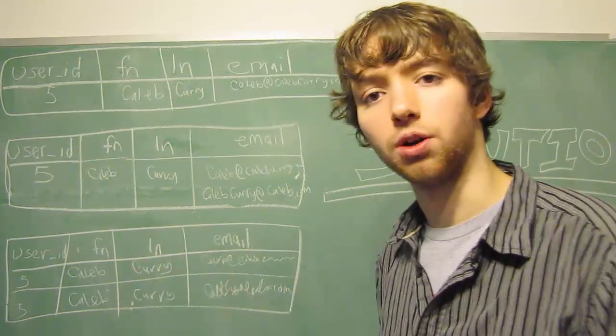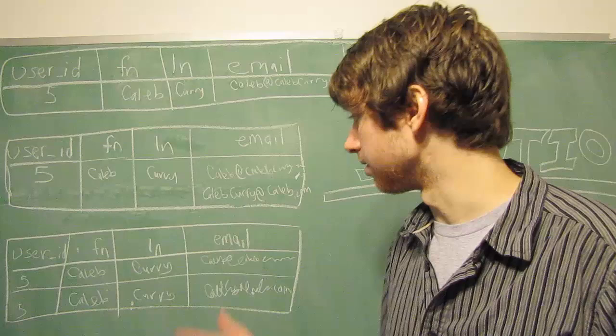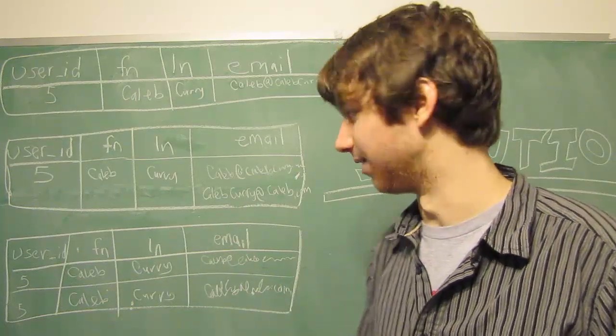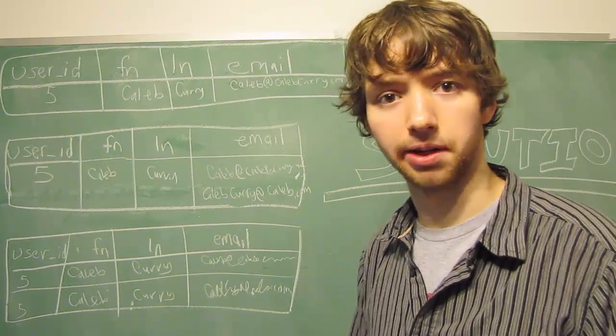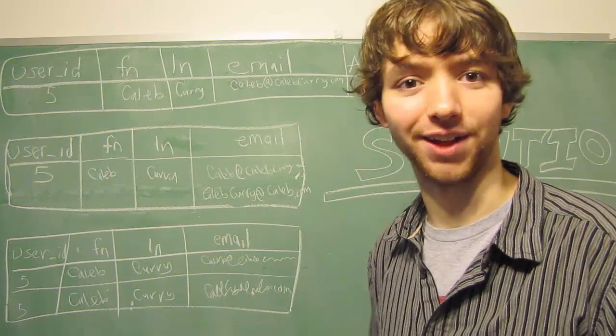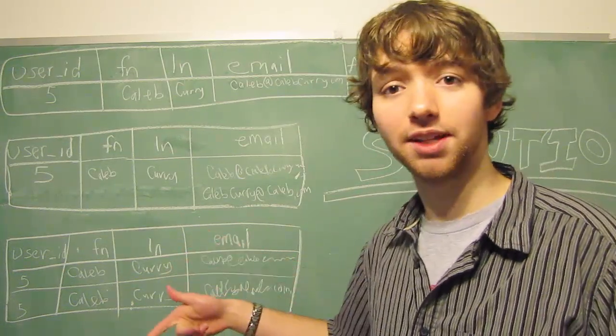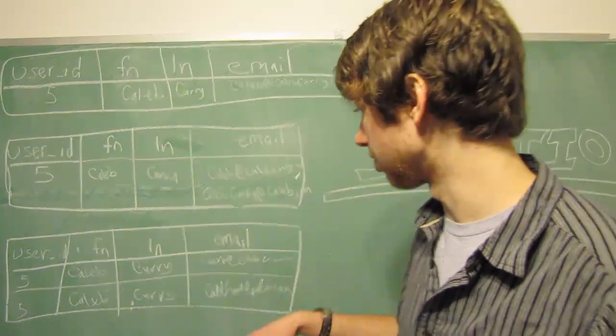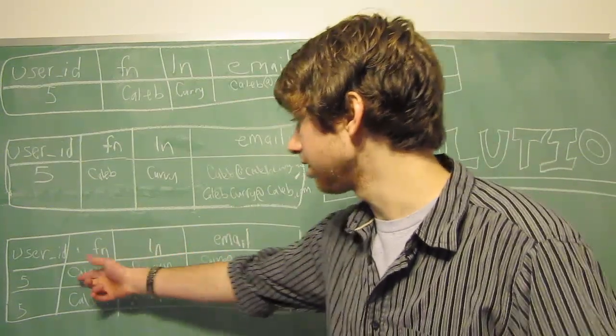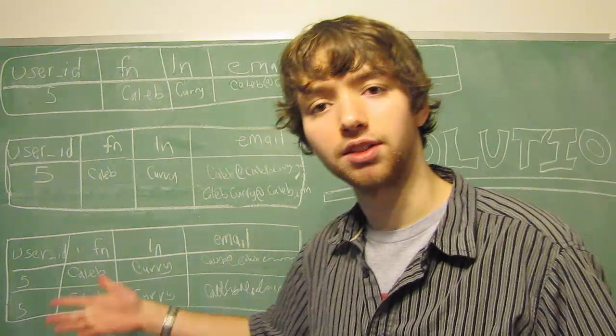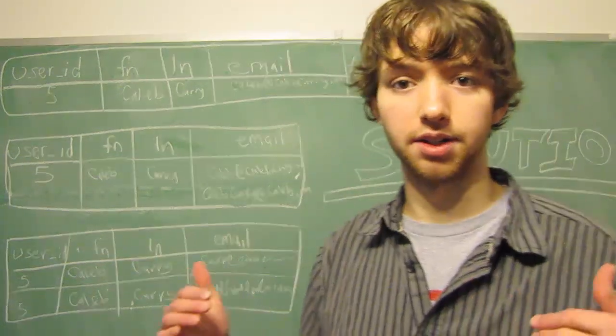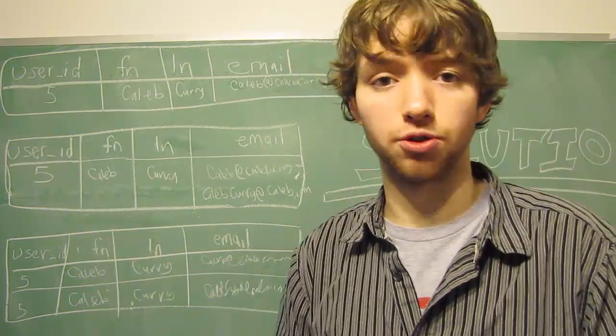So we have all that duplicate data. Now what if this Caleb Curry goes and gets a name change, because that's such a dumb name, right? No. I'm just kidding, because that's my name, and I actually like that name. But anyways, if he gets a name change and he updates his information, what if only this one's updated? So now we have conflicting data. And see, that's the problem with data integrity. We need to make sure that doesn't happen.